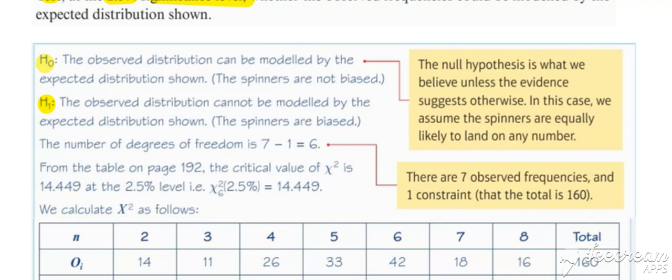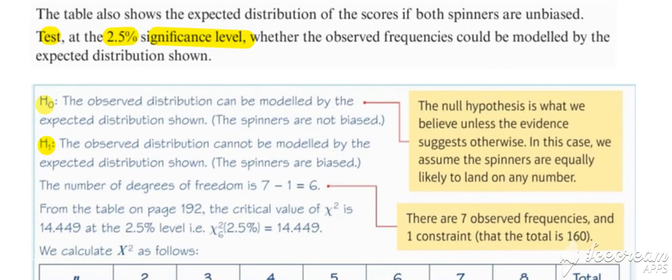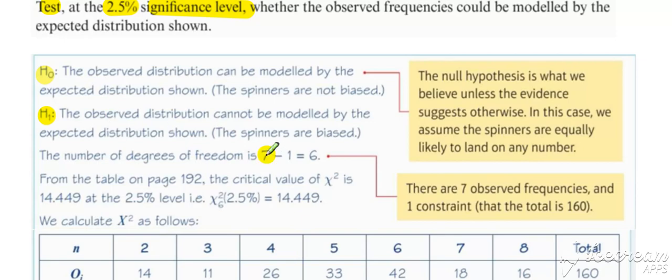Degrees of freedom this time, always check to see whether any of your expected are less than five, they're not, so therefore we have seven cells, one constraint, so degrees of freedom is equal to six.